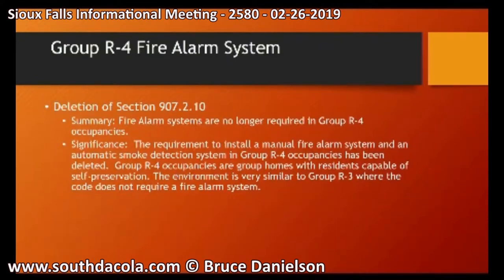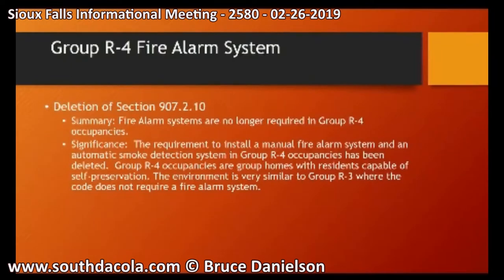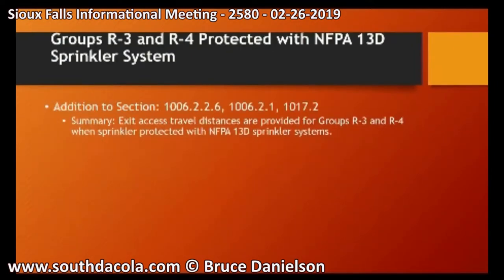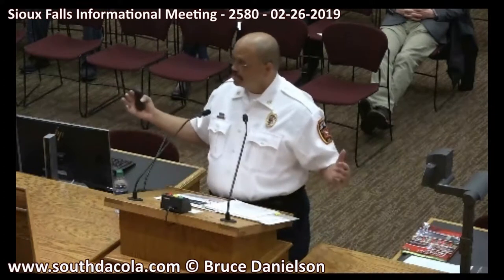Group R4 fire alarm systems — this is actually a deletion from code. The requirement for a fire alarm system in a group R4 occupancy is being removed; it is no longer required. Fire code officials are in agreement this is the right approach. Additionally, group R3 apartments and group R4 living arrangements protected by a 13D domestic sprinkler system are now allowed increased travel distances — approximately 25% greater for most structures — allowing additional egress paths when a building is sprinklered.